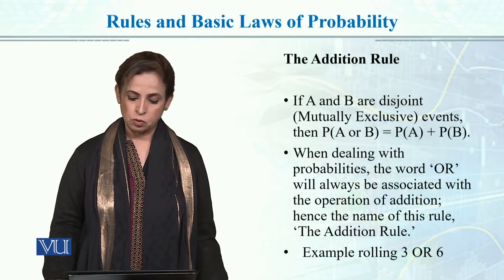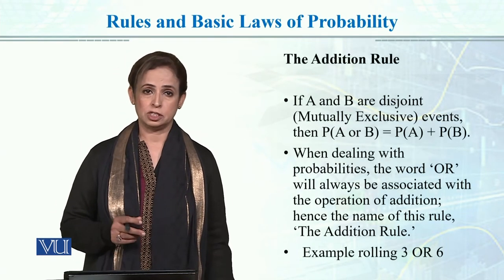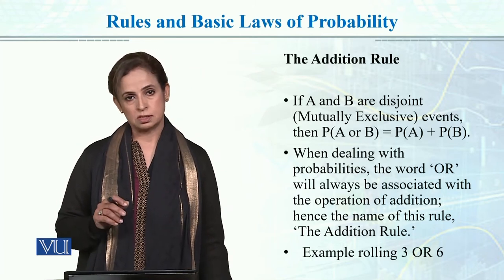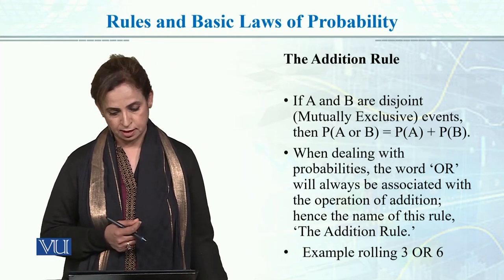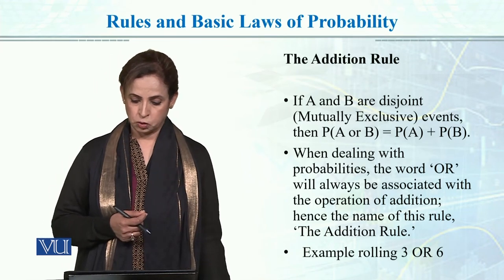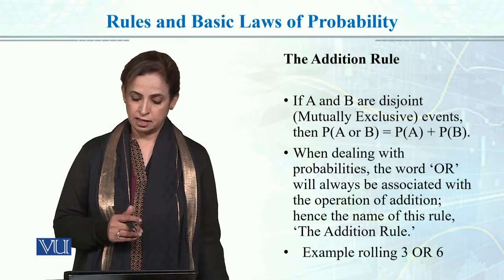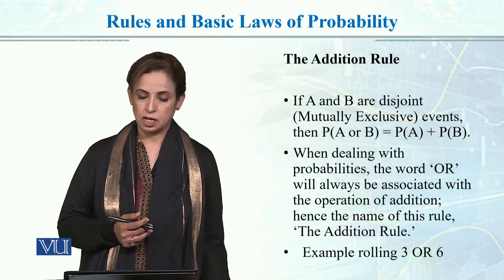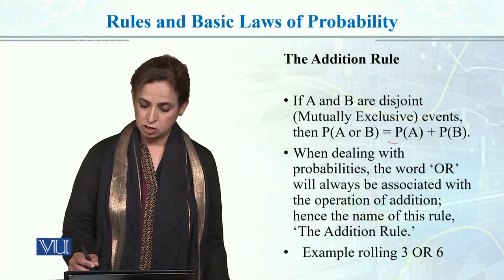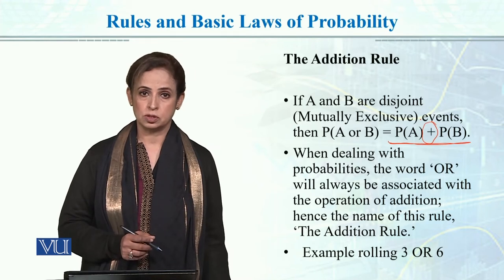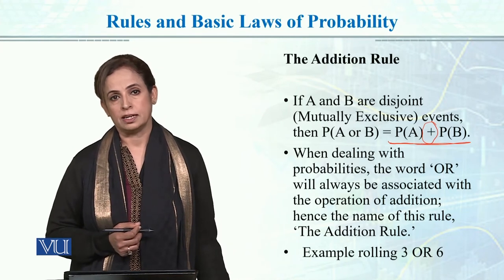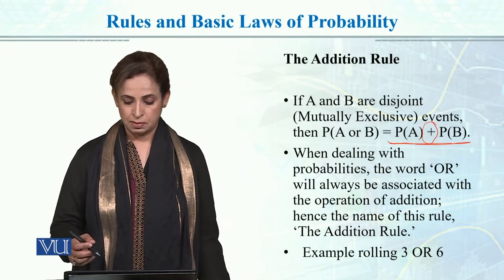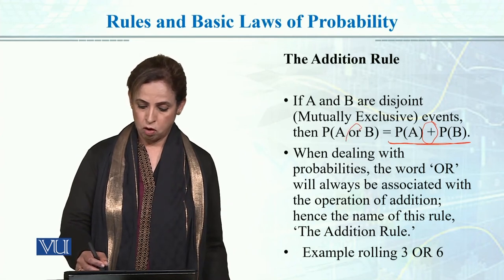We have different rules and laws for this. In probability, you need to understand the addition rule and multiplication rule. If events A and B are disjoint — that is, mutually exclusive — then the probability of A or B is equal to the probability of A plus the probability of B. We use the addition rule when events are mutually exclusive. To calculate the probability, we add the individual probabilities of A and B.